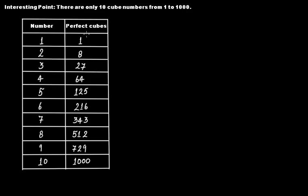There is an interesting point here: there are only 10 cube numbers from 1 to 1000. If you take the numbers one through ten and find their perfect cubes, you get: 1, 8, 27, 64, 125, 216, 343, 512, 729, and 1000 — the perfect cube of 10. So you have only 10 perfect cubes from 1 to 1000. This one is the perfect cube of 1 and 1000 is the perfect cube of 10.